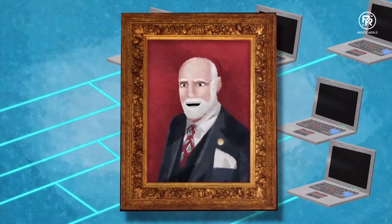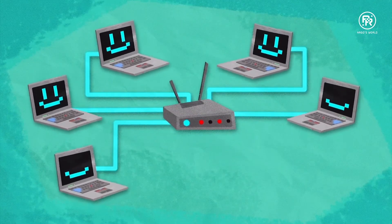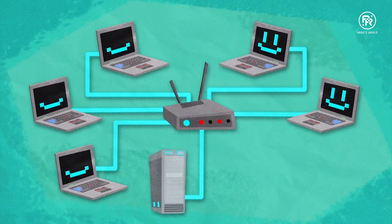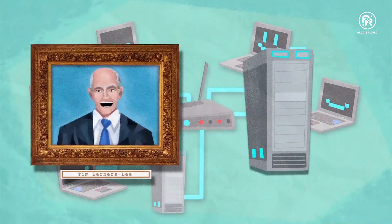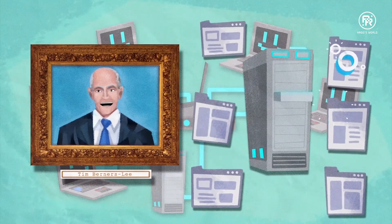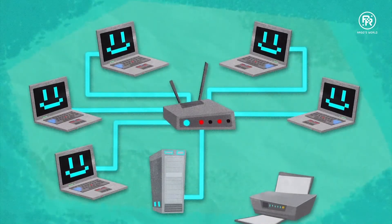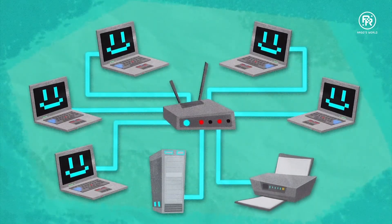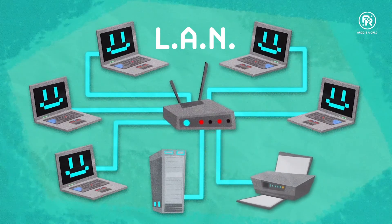You can connect different devices to a LAN. For example, a file server — the other computers can access the files stored on the file server. There's also something called a web server that stores web pages, as in World Wide Web. If you connect a printer to the LAN, every computer can print to it.